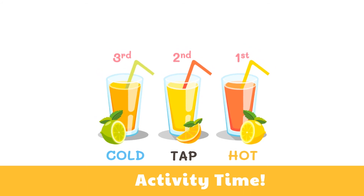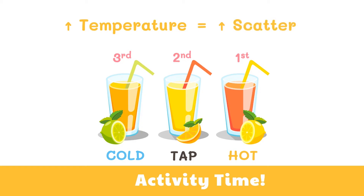Therefore, we can say that the higher the temperature, the faster the powder drink particles scattered. Temperature and particle speed have a direct relationship towards each other.